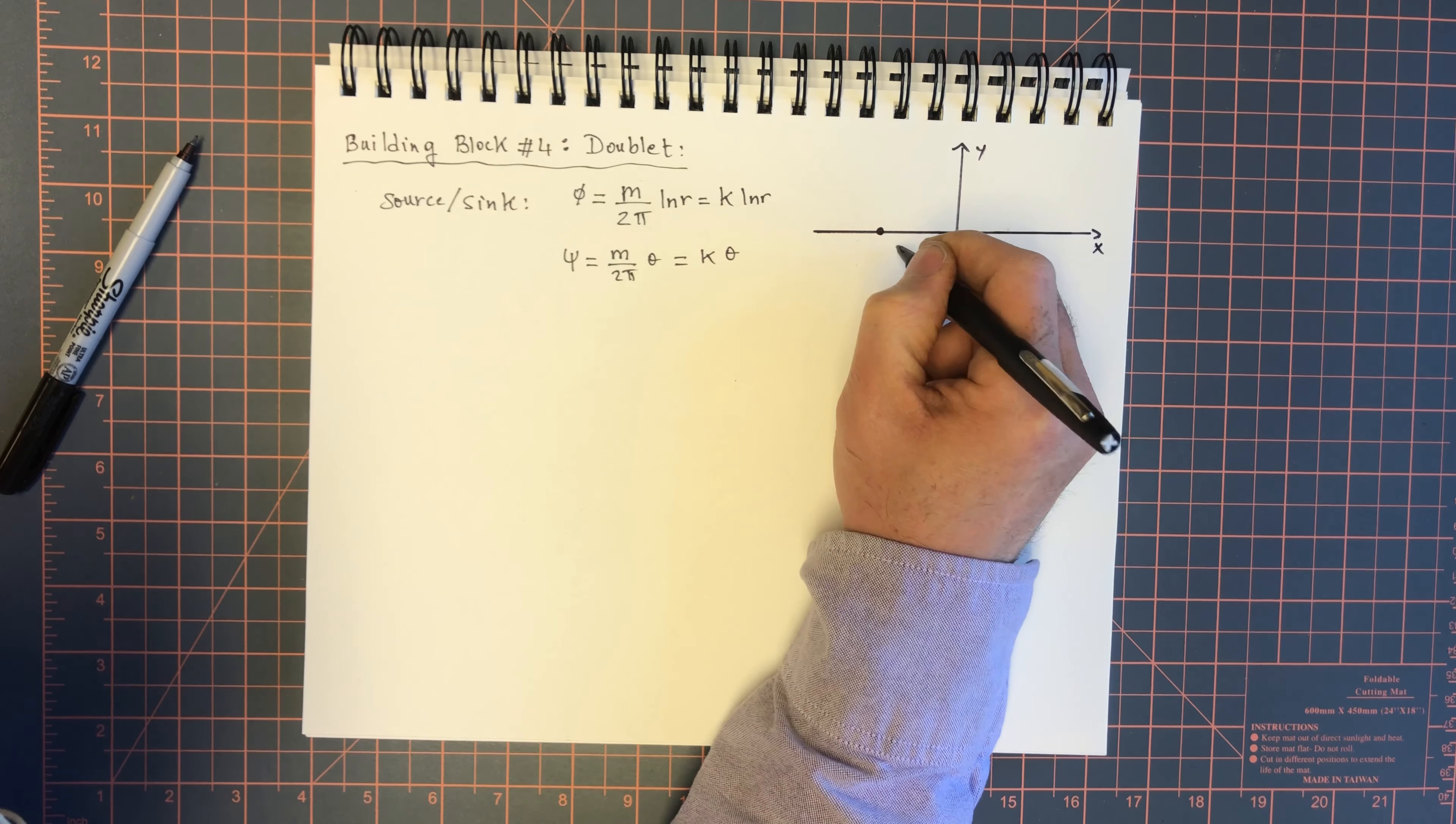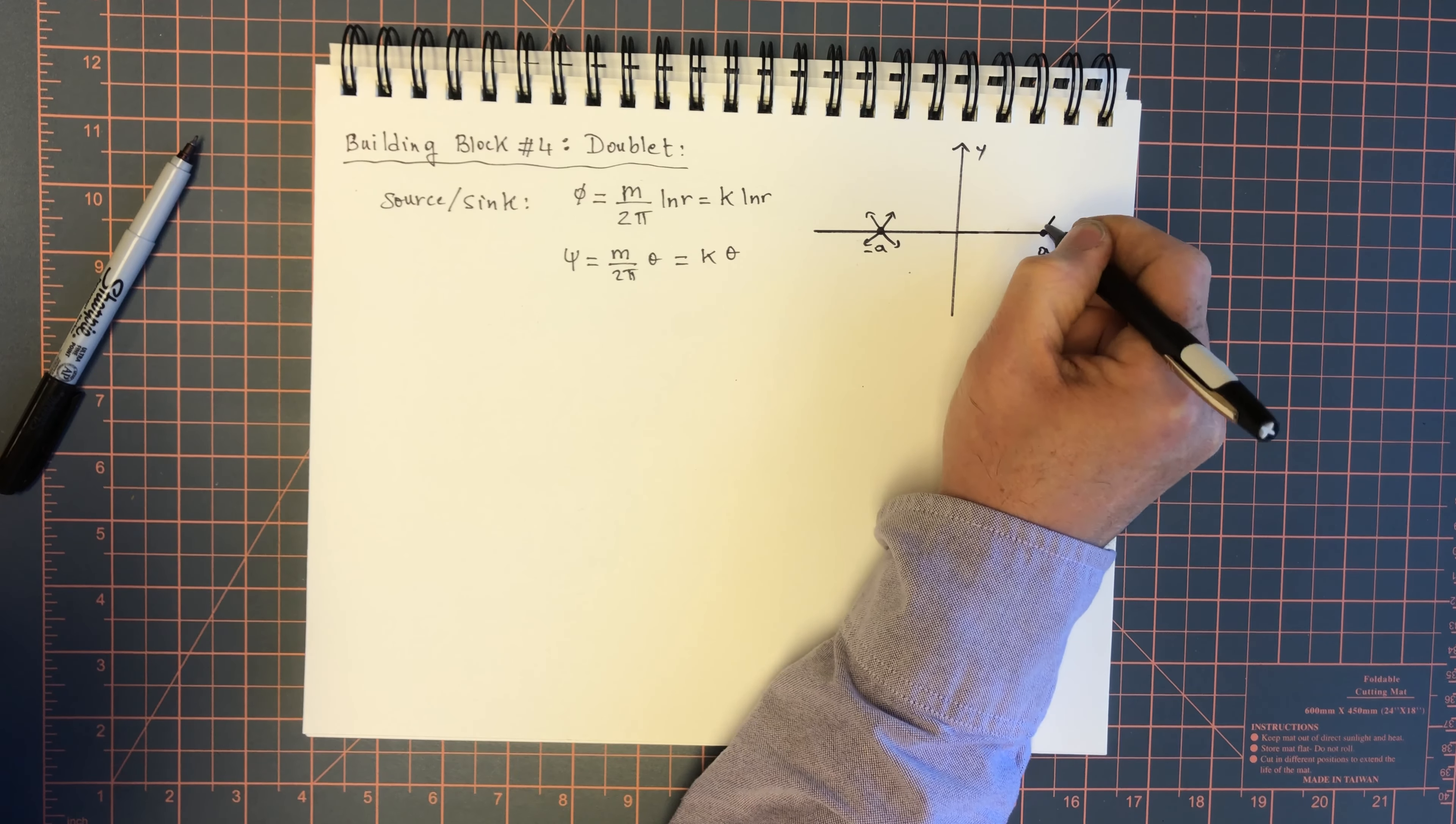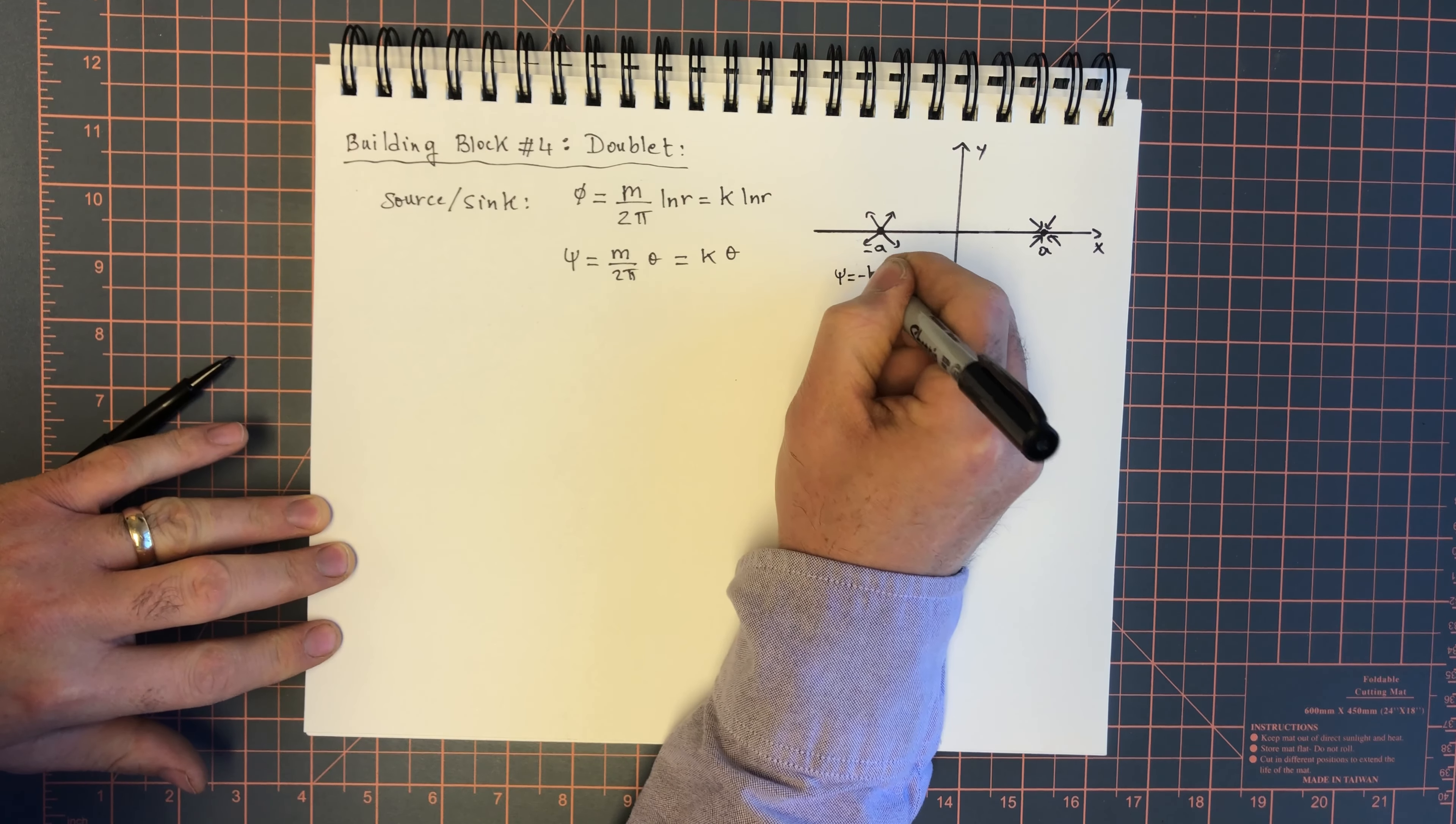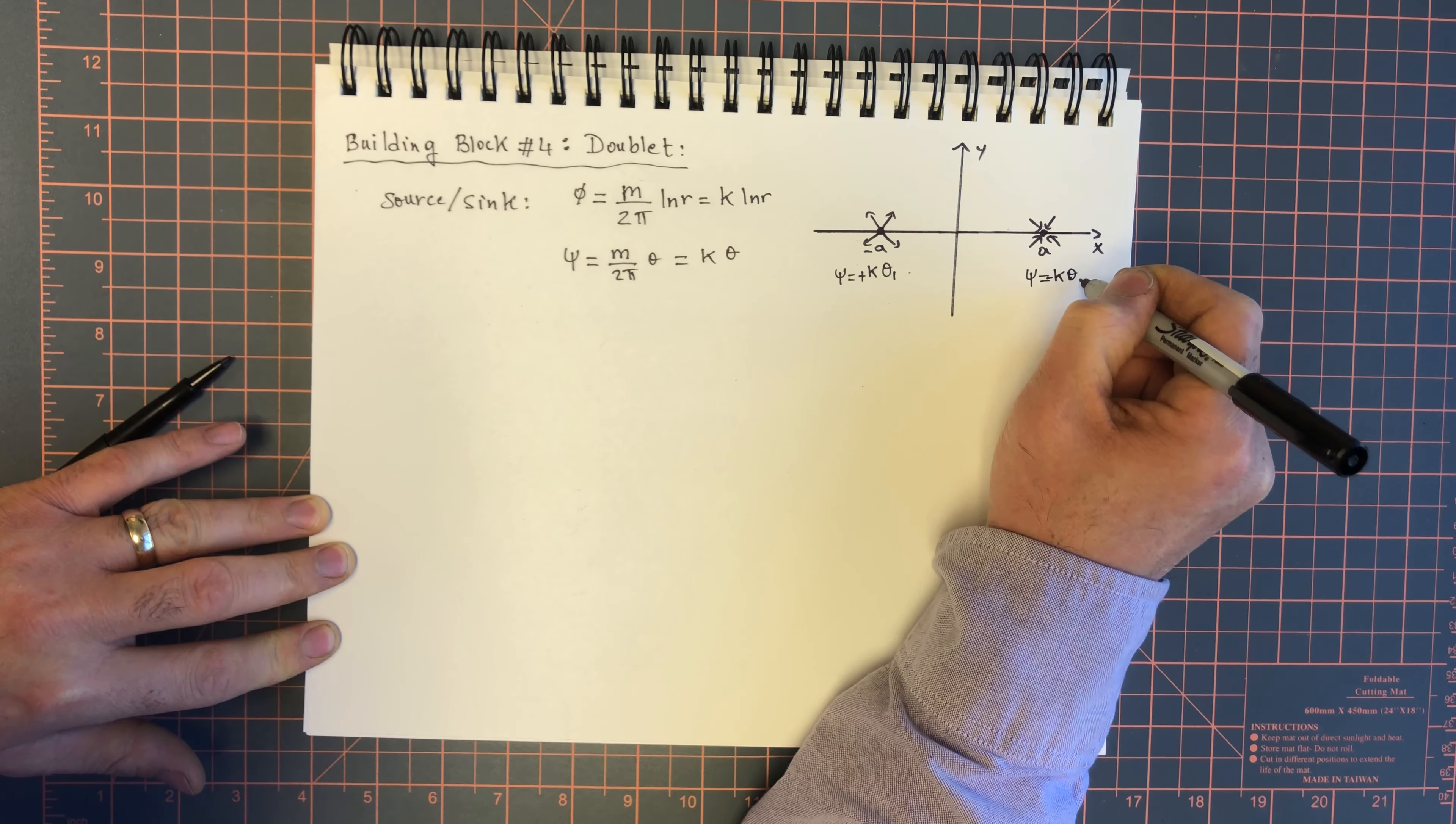At point minus a, I want to put a source. And at point a, I want to put a sink. So over here, we're going to put a source and over here, we're going to put a sink. Therefore, psi over here is k theta 2 and psi over here is minus k theta 1 with respect to point a.